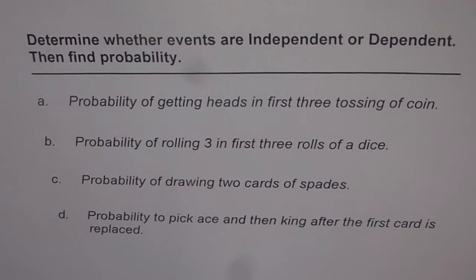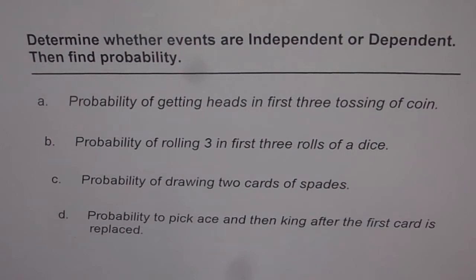Part A is probability of getting heads in the first three tossings of a coin. Part B is probability of rolling three in the first three rolls of a dice. C is probability of drawing two cards of spades. And D is probability to pick ace and then king after the first card is replaced.